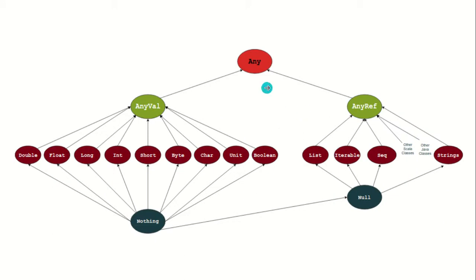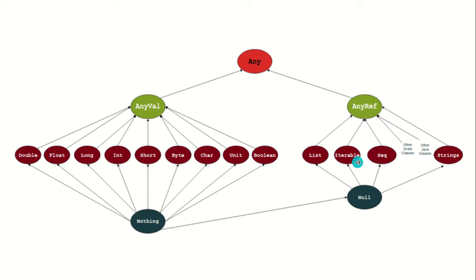You can see this is the type hierarchy. At the very top, we have Any. Then we have AnyVal and AnyRef. Under AnyVal, we have nine different types available: Double, Float, and so on. Under AnyRef, we have List, Iterable, Sequence, String, and so on. This is the type hierarchy that we talked about in the first two slides.